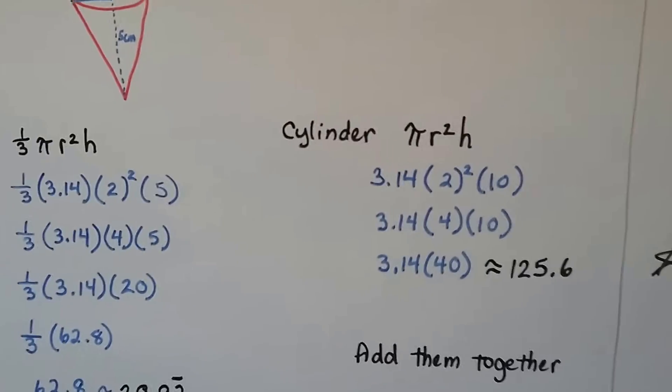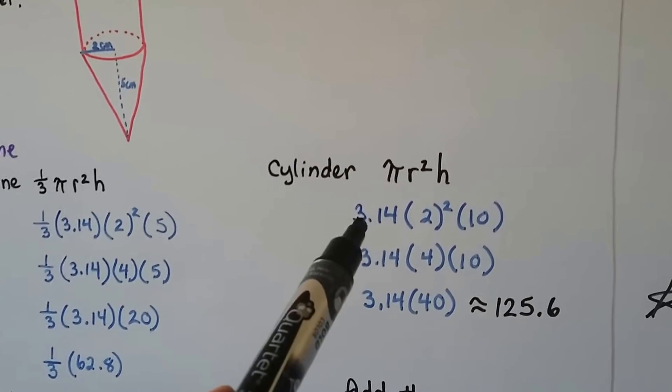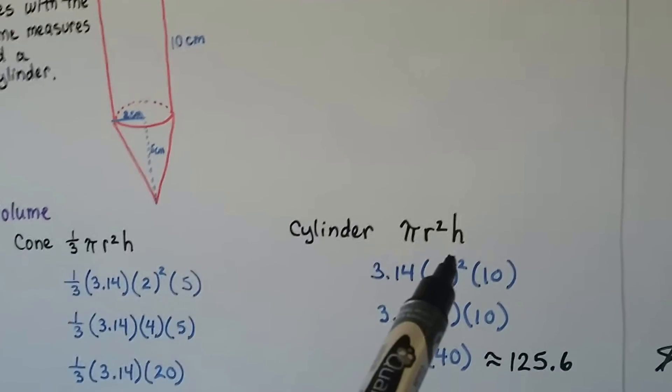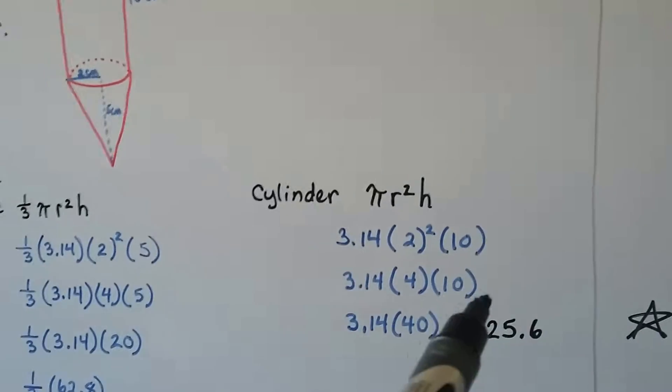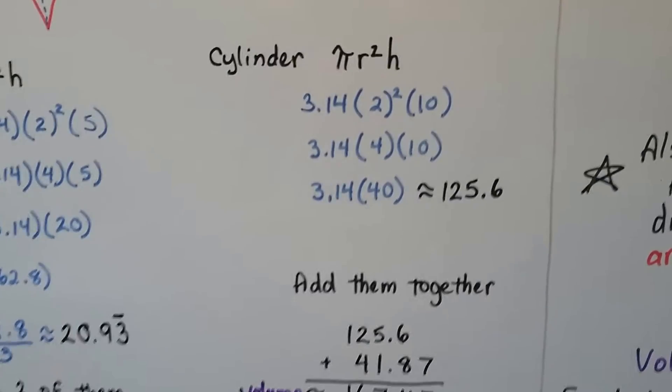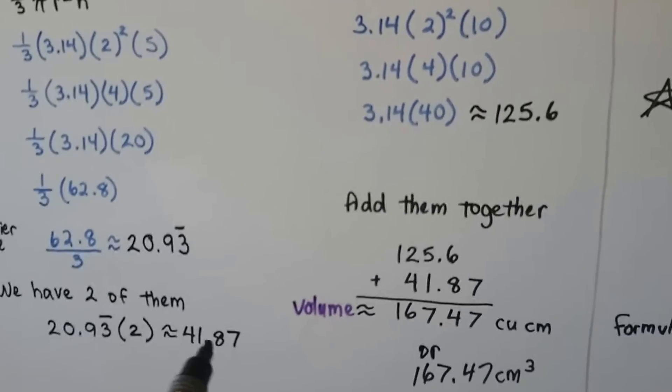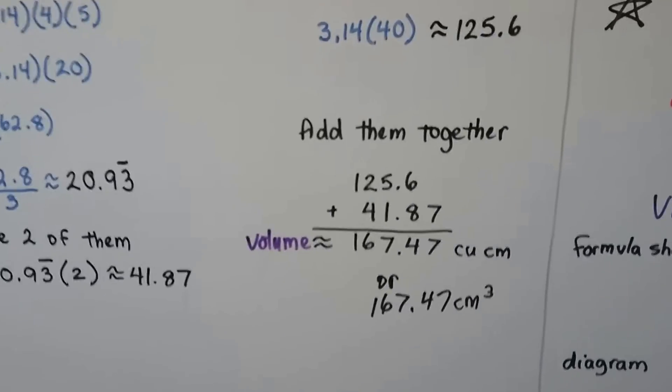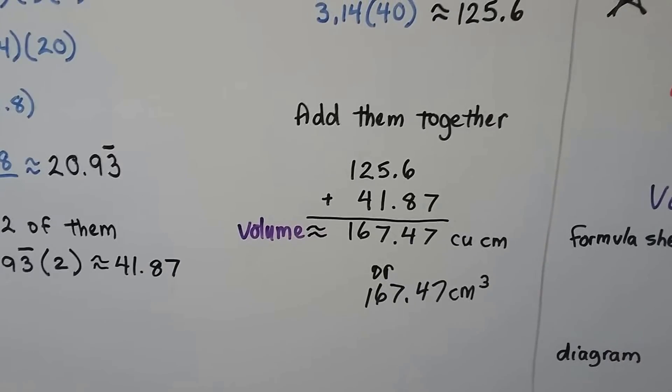Now, for the cylinder, the formula is pi r squared h. So we have 3.14 times the radius, because it's sharing the radius with the cone. That's going to give us 2 squared, which is 4, and the height is 10 centimeters, so we have 10. 4 times 10 is 40. 3.14 times 40 is 125.6, approximately, because we're dealing with pi. We add the 41.87 and the 125.6 together, and the volume is approximately 167.47 cubic centimeters.